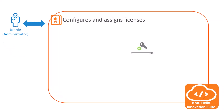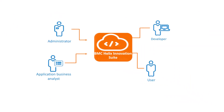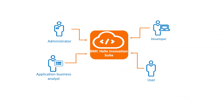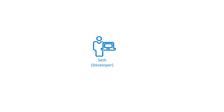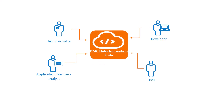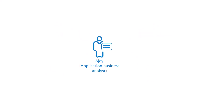After Johnny performs the initial set of tasks, he configures the licenses and assigns them to users to access BMC Helix Innovation Suite and its applications. Let's say Johnny created the developer role and assigned it to the user Seth, and an application business analyst role and assigned it to the user Ajai.